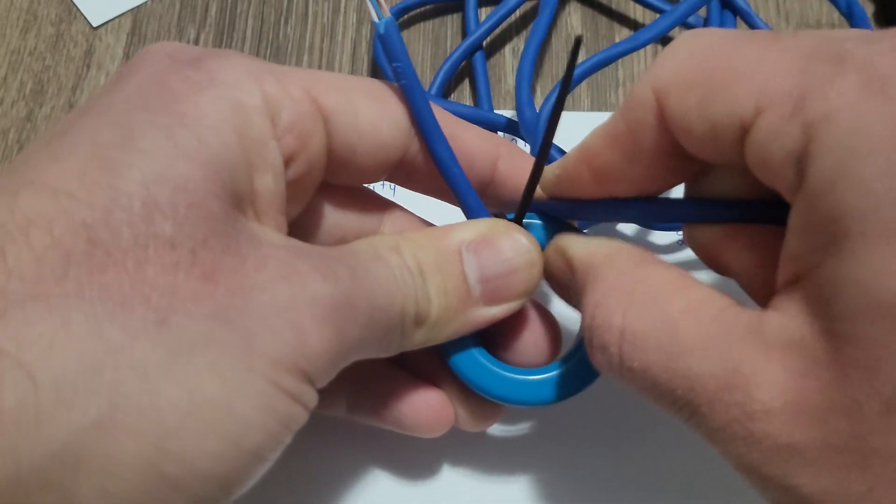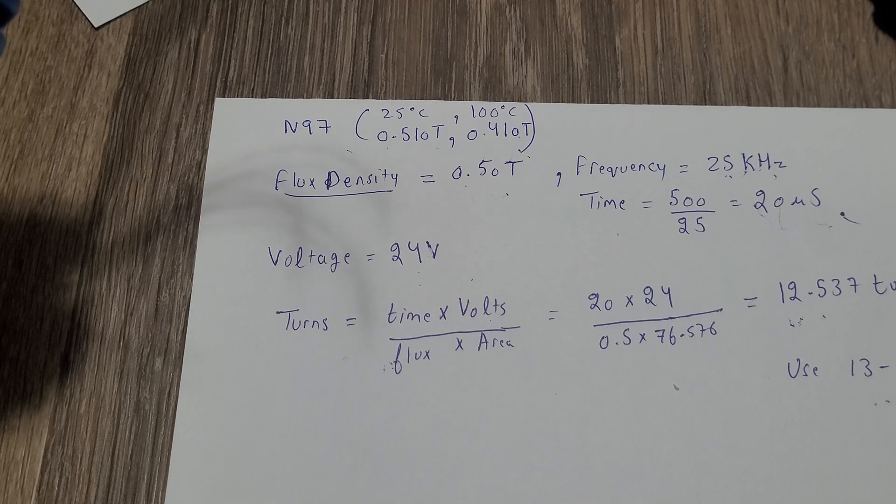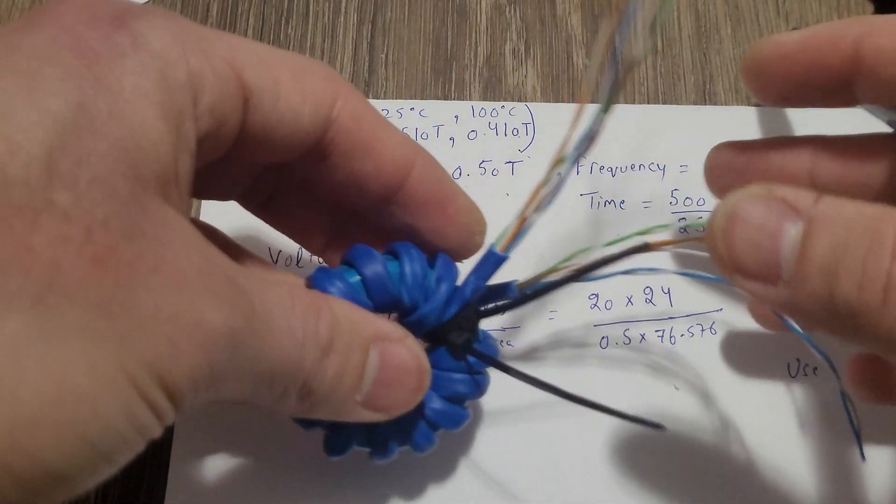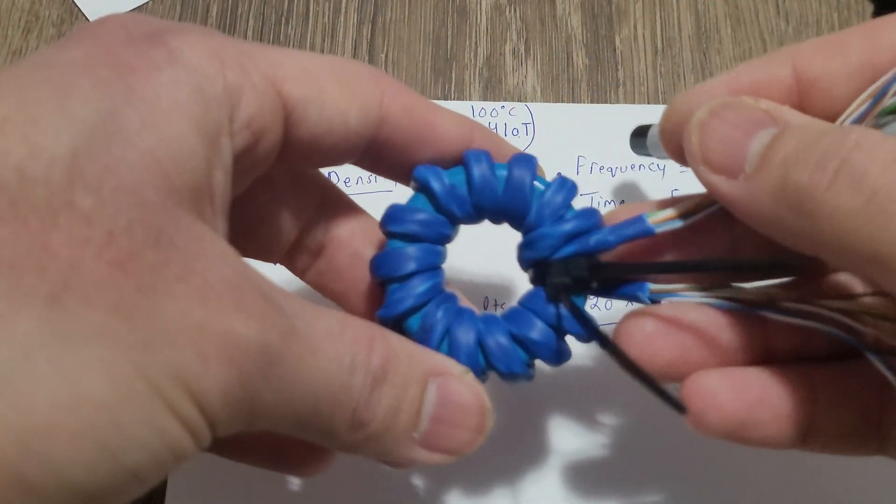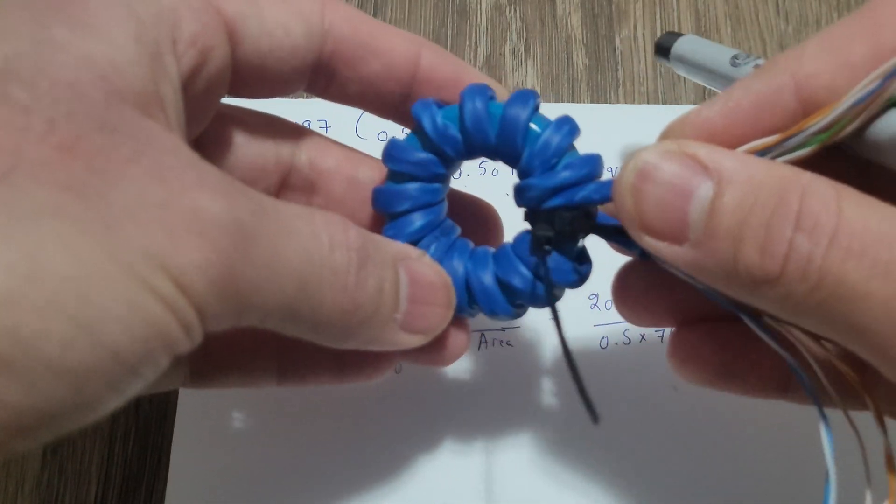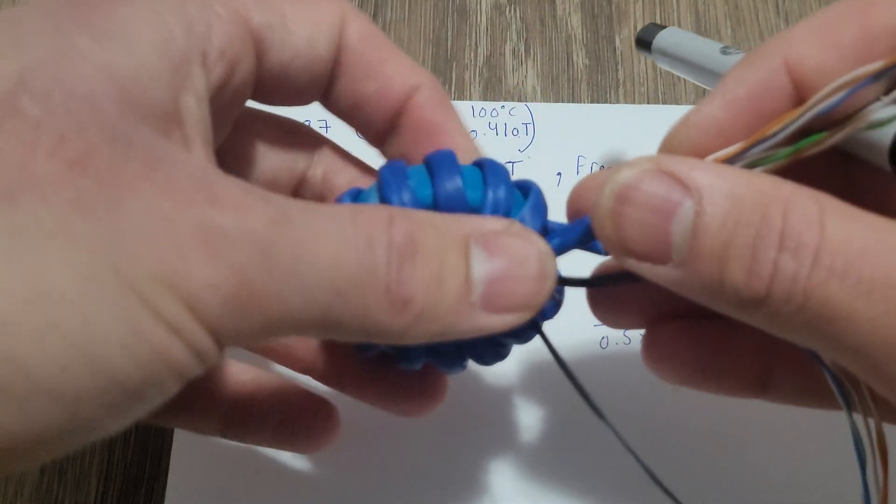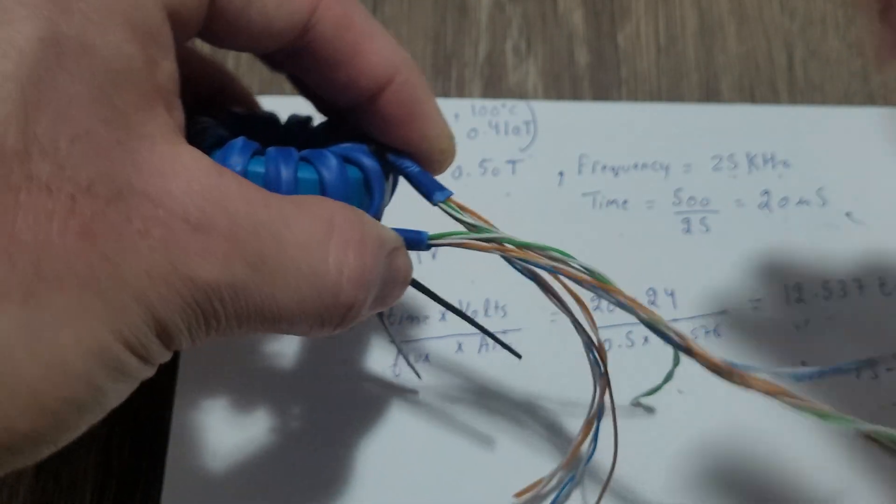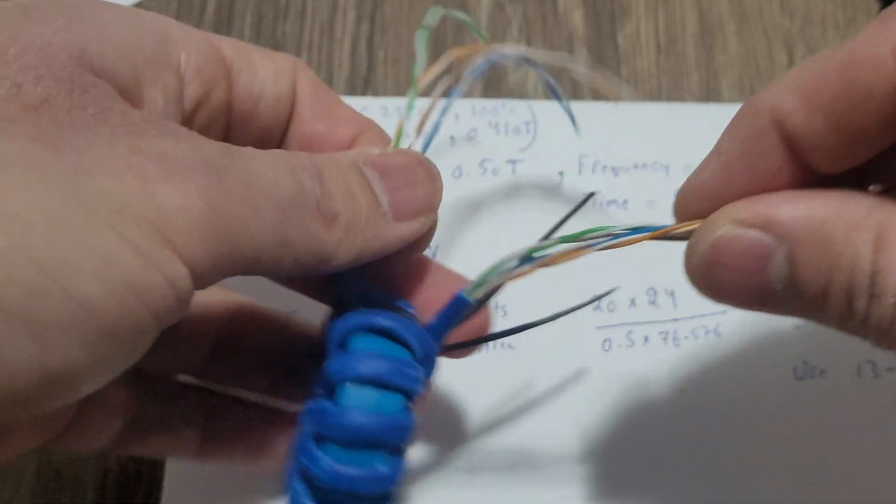So this is what it looks like after you have done all the turns. Make sure you are winding the toroid core very tightly. So Cat 5 cable is perfect solution for this for your full bridge and your half H bridge.